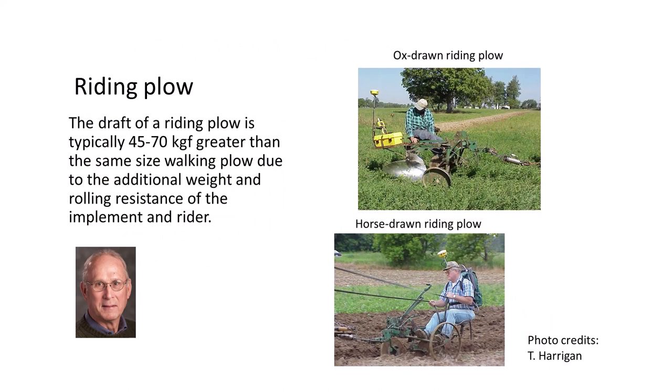The draft of a riding plow is typically 45 to 70 kilogram force greater than a similar size walking plow due to the rolling resistance of the riding plow. Soil moisture also has a big impact on plow draft — a 60% increase in plow draft was measured in the same field in dry soil in the fall compared with moist soil in the spring.